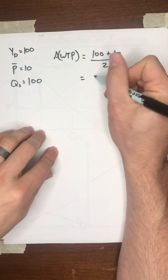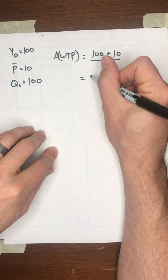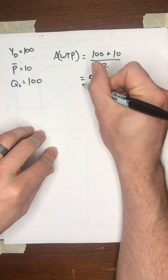That is equal to the y-intercept of the demand curve plus the legislated price divided by 2, which is 100 plus 10 is 110 divided by 2, 55.